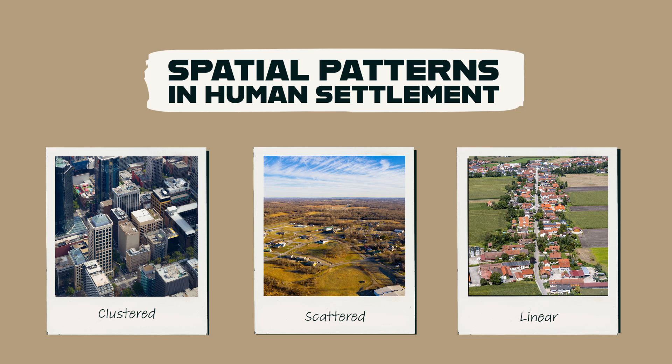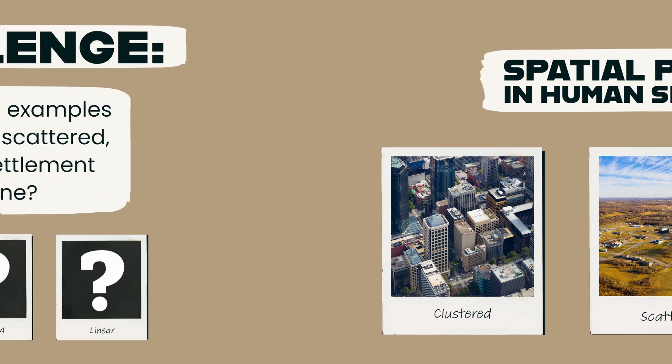These are the three main types of spatial patterns in human settlement on a global scale: clustered, scattered, and linear. Understanding these patterns can help us understand the forces that shape the way people live and the impacts on the environment.